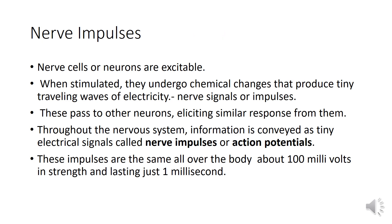Let us start discussing about nerve impulses. Nerve cells or neurons are excitable. When stimulated, they undergo chemical changes that produce tiny traveling waves of electricity — nerve signals or impulses. These pass to other neurons, eliciting a similar response from them.